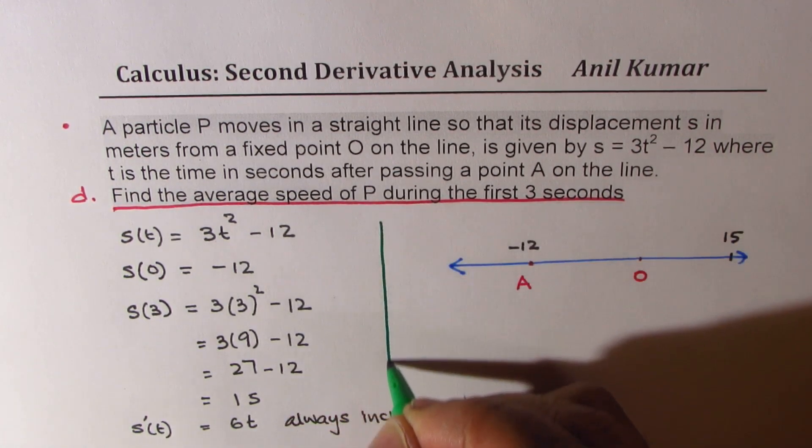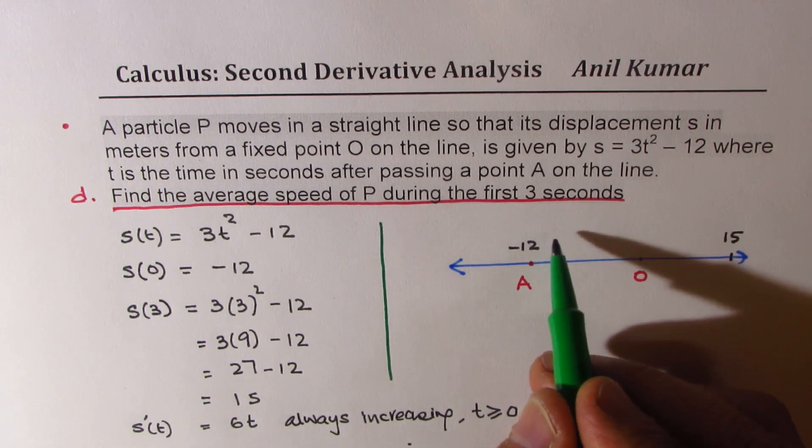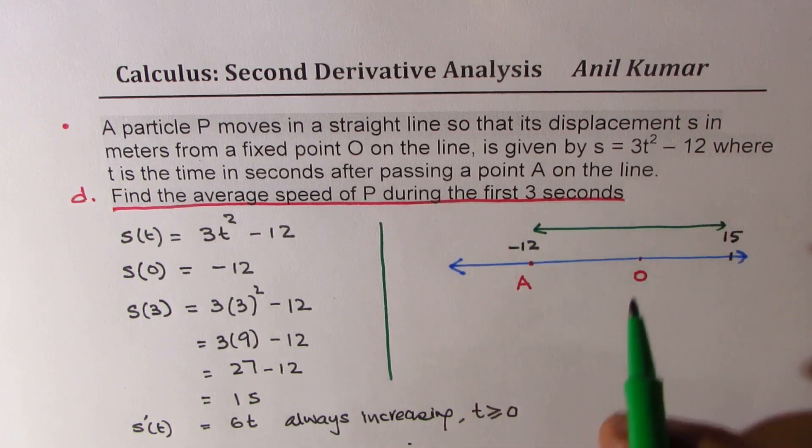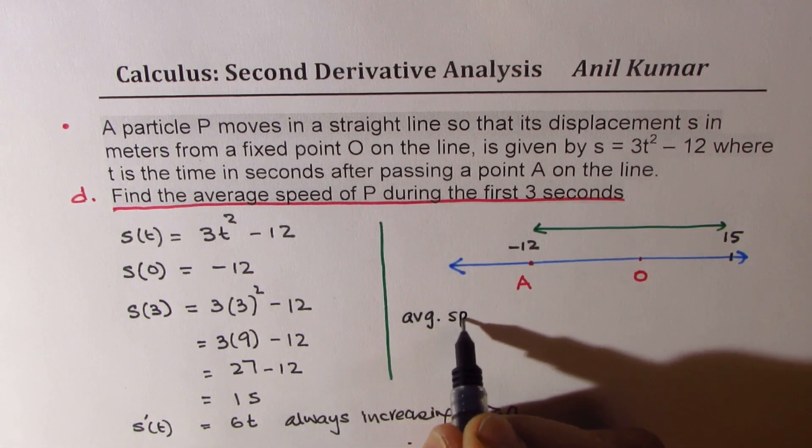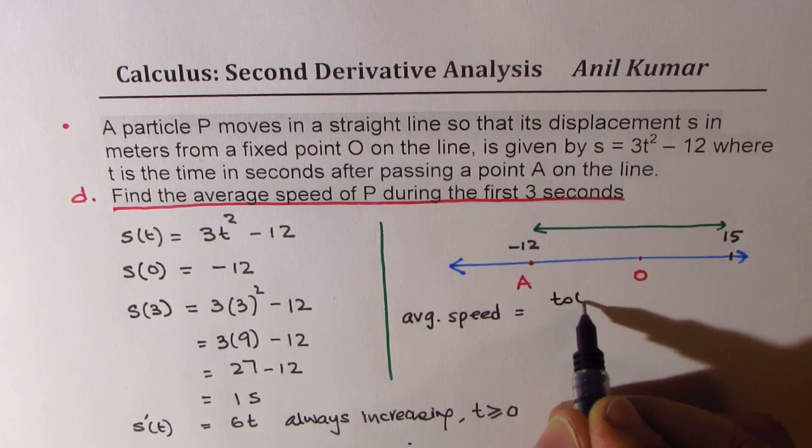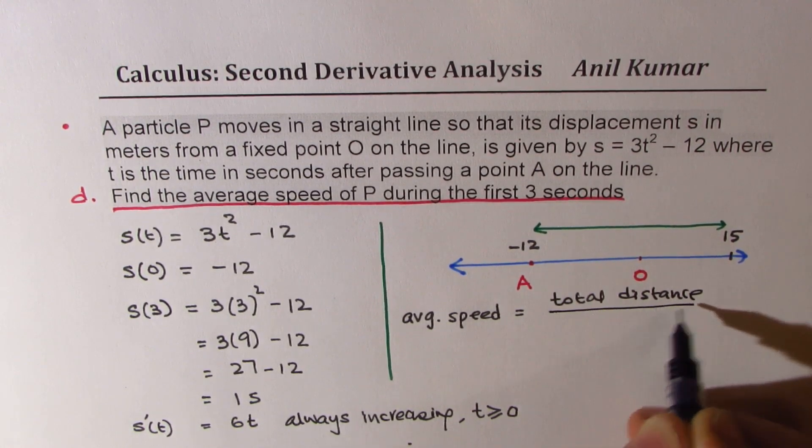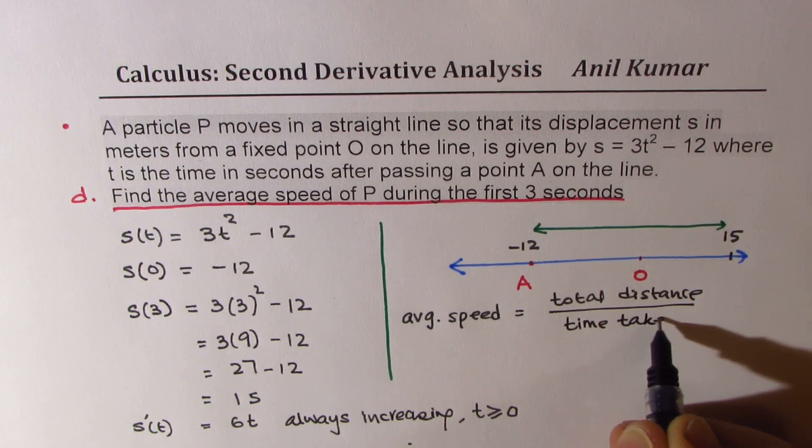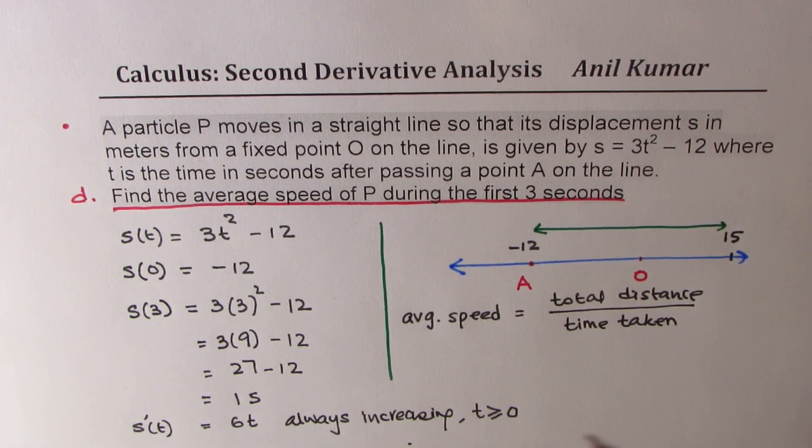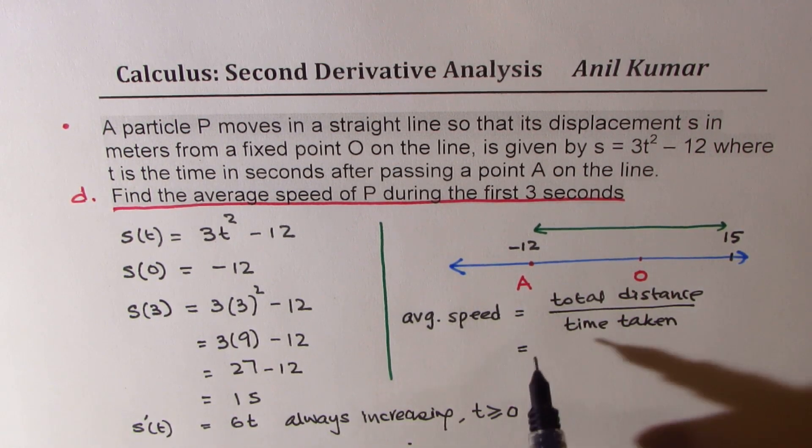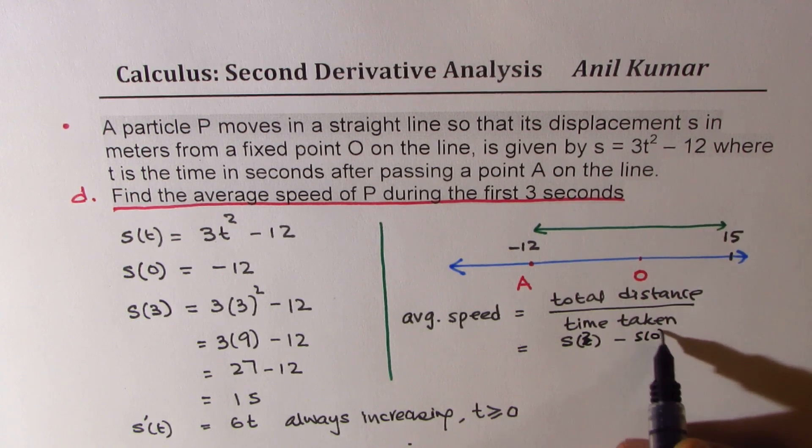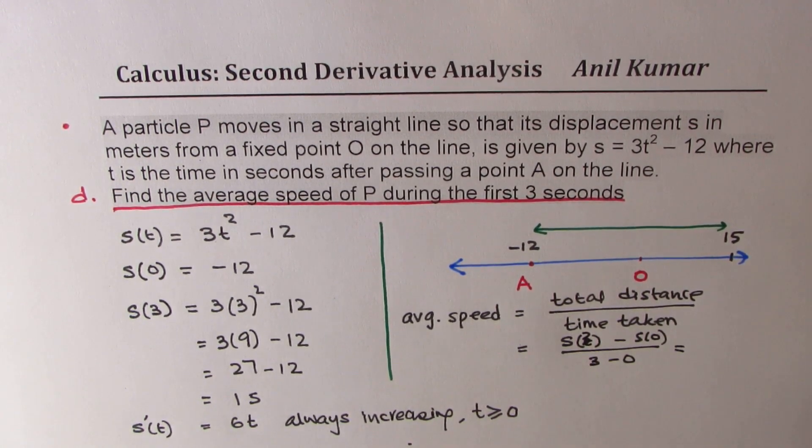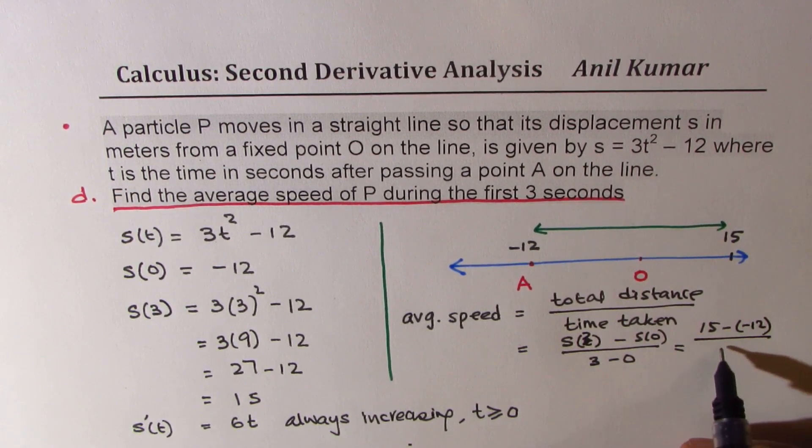Now with this clear diagram, I hope it is absolutely clear that the distance is this total distance. So what we need to find here is the ratio. We need average speed. Average speed is total distance over time taken. Now since the particle is moving only in one direction, we could straight away do our calculations by taking S of 3 from S of 0 and dividing by 3 minus 0. So that gives you total distance and time taken. So in this case, the distance is 15 minus of minus 12 divided by 3.